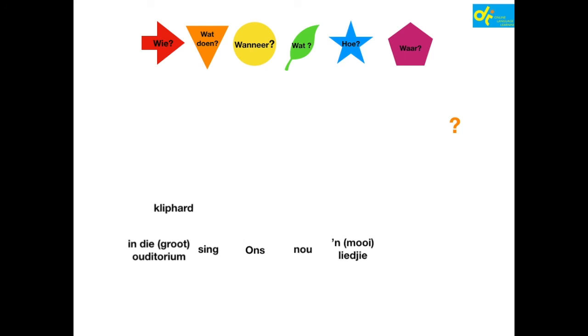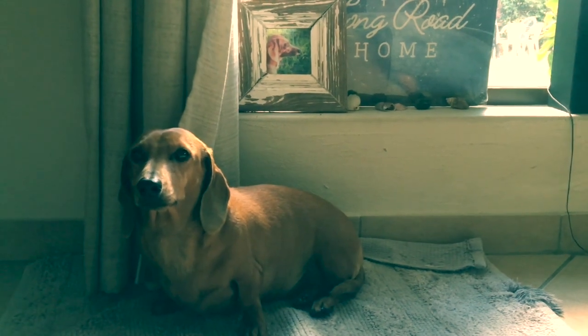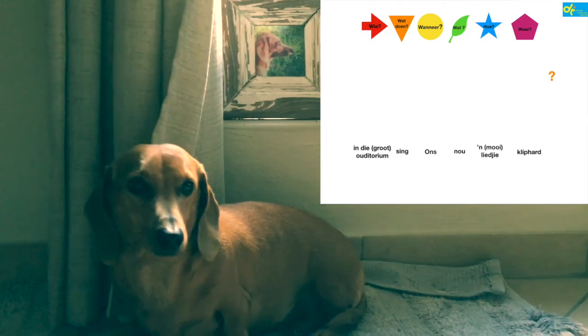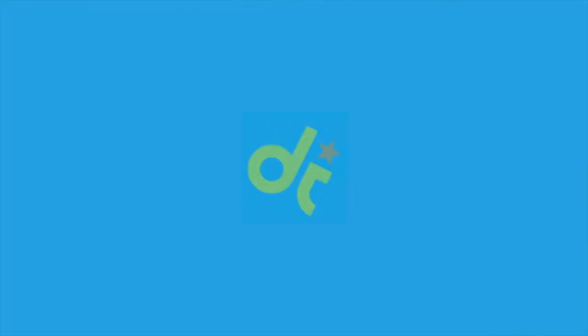Practice example starting with place: 'In die groot auditorium sing ons nou 'n mooie liedkie kliphard.' All together now: 'In die groot auditorium sing ons nou 'n mooie liedkie kliphard.'